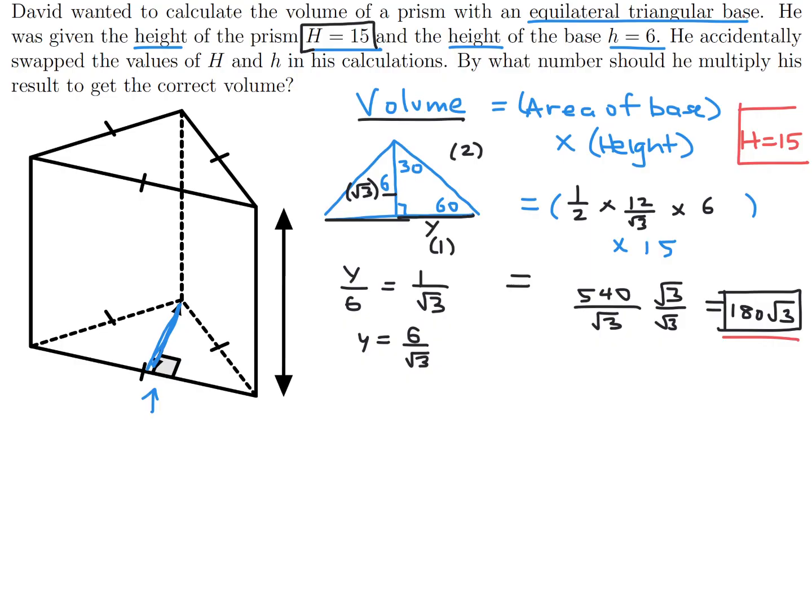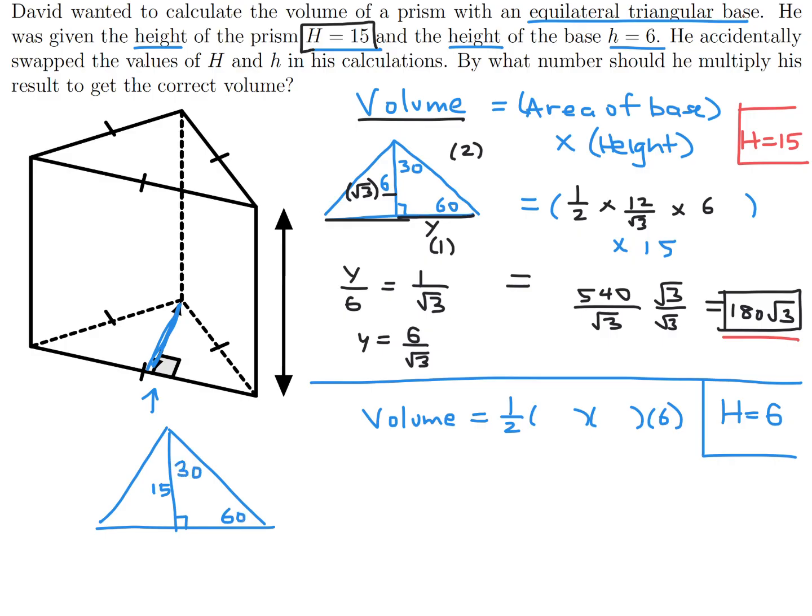Now what we have to do is figure it out for the other scenario. This is the correct way of figuring it out. Then what they're saying is that when he actually calculated his, he switched the numbers. So he actually wrote the big H to be 6 and the small h to be 15. So let's do that. So pretty much the same thing. The volume this time is 1 half base times height times the height, which is 6 in this case. And then similarly, we'll just do that triangle thing. And this time it's 15. And again, same thing, 60, 30. So the ratio, if we call this X this time, then that would basically mean that X over 15 is the same as 1 over root 3. So that basically means that X is 15 over root 3.